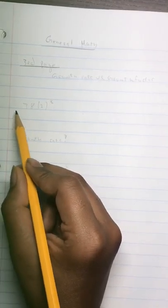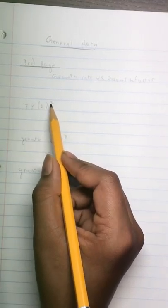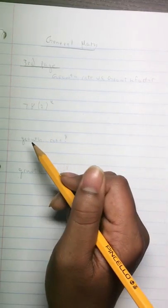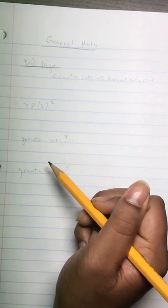Growth rate versus growth factor. Let's say we have an exponential equation: 78 times 2 to the power of x, and we need to find the growth rate and the growth factor. This is a really easy concept. I'm just making this because most people get them confused, and I'm here to clarify which one is which.